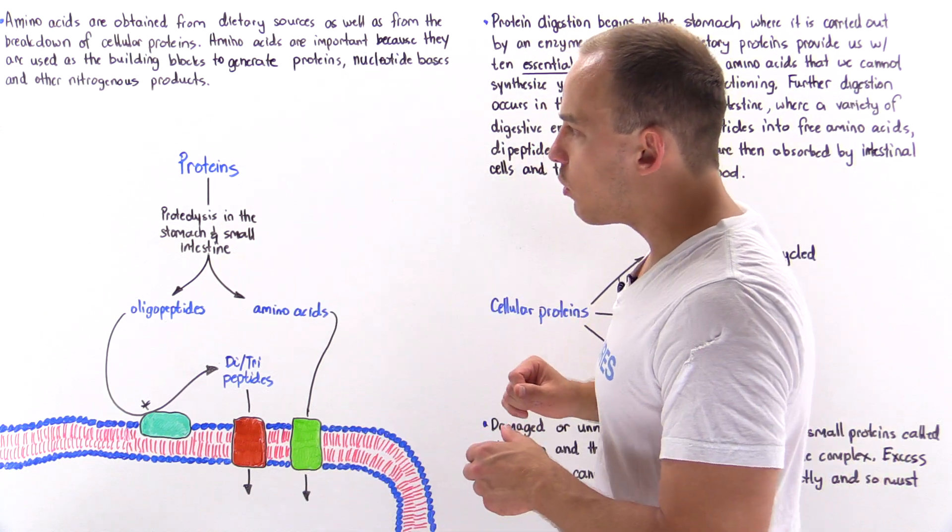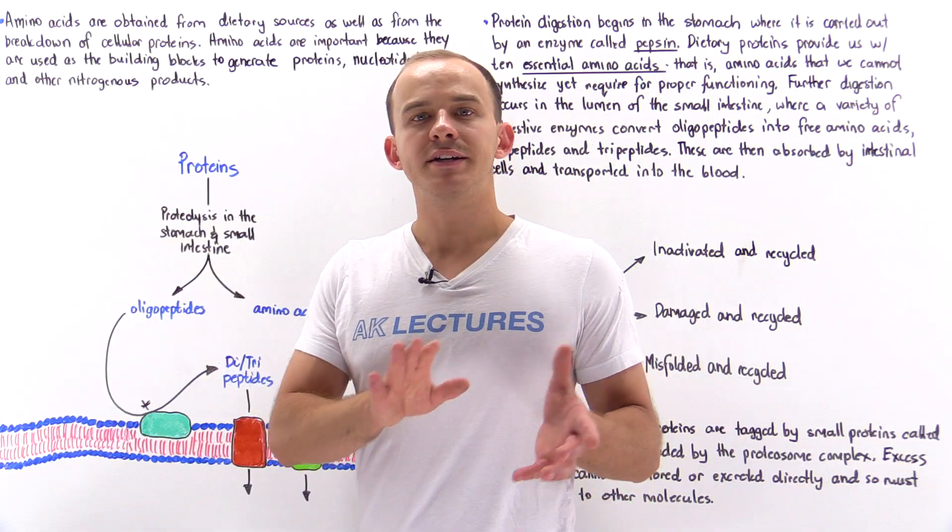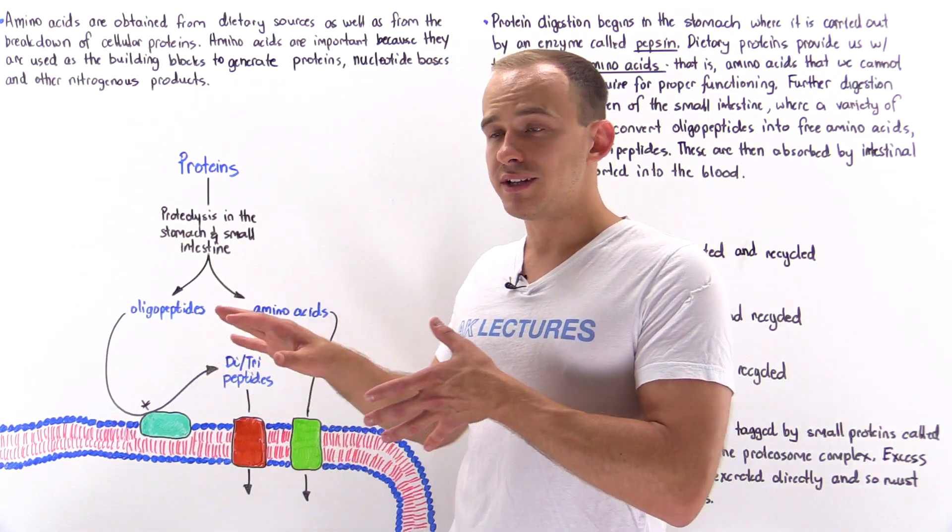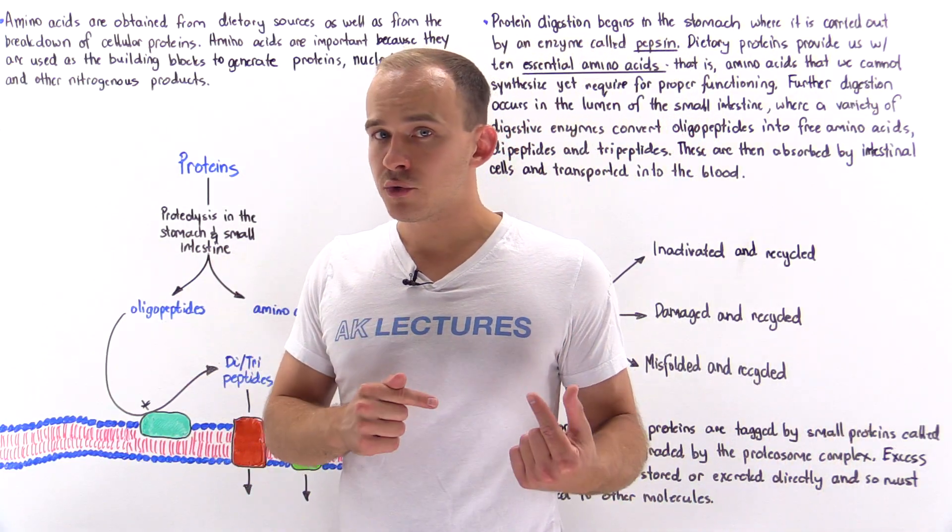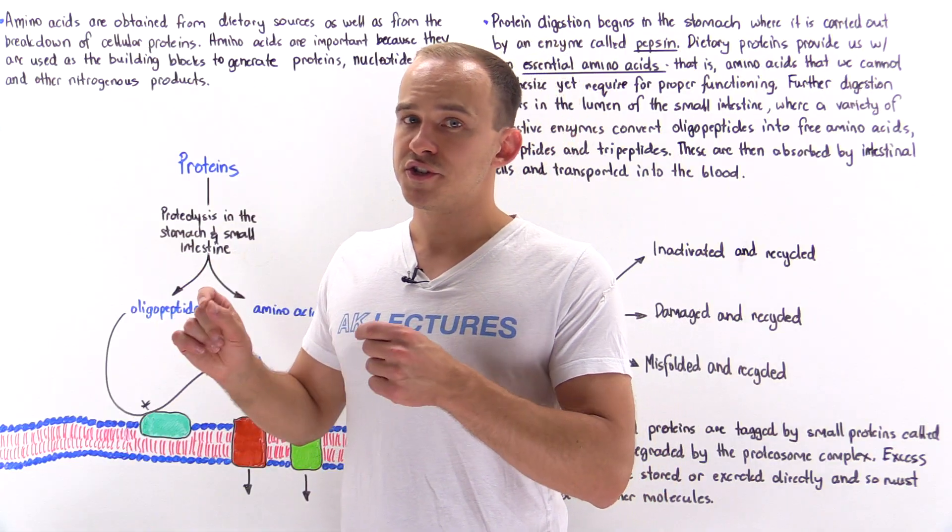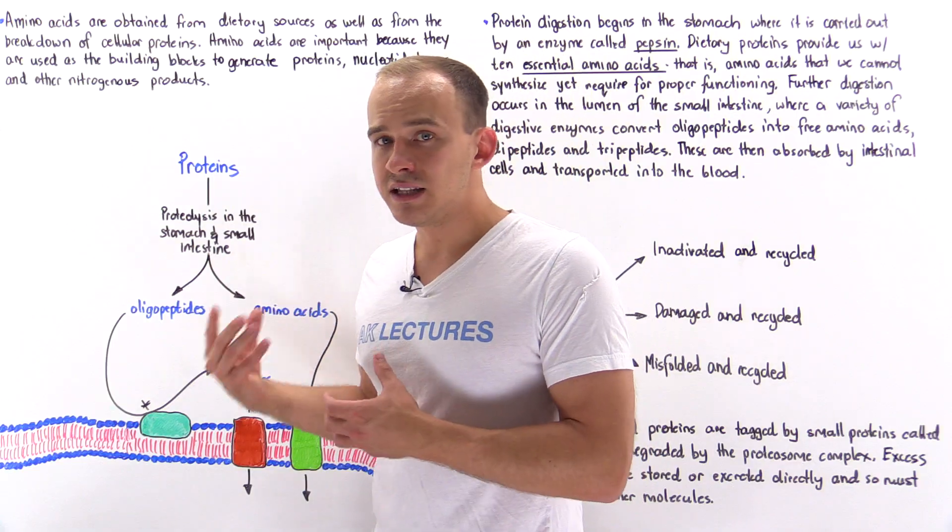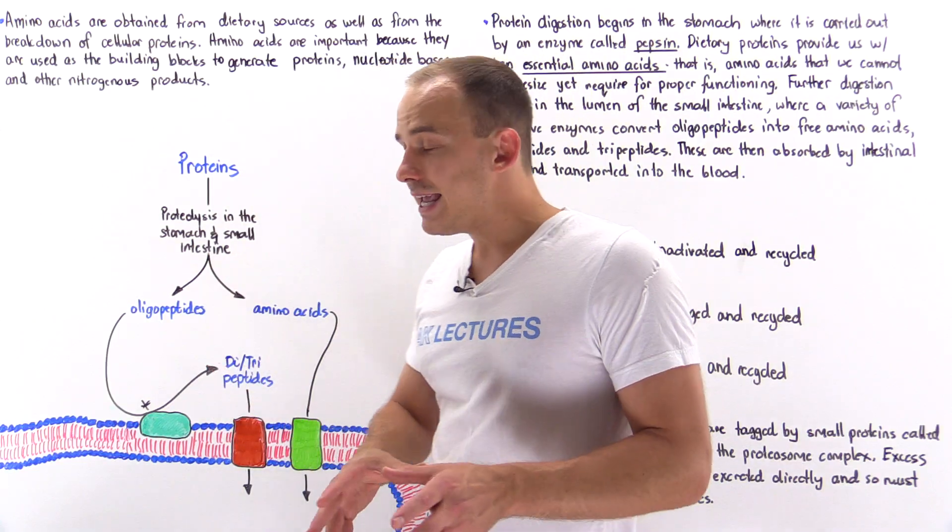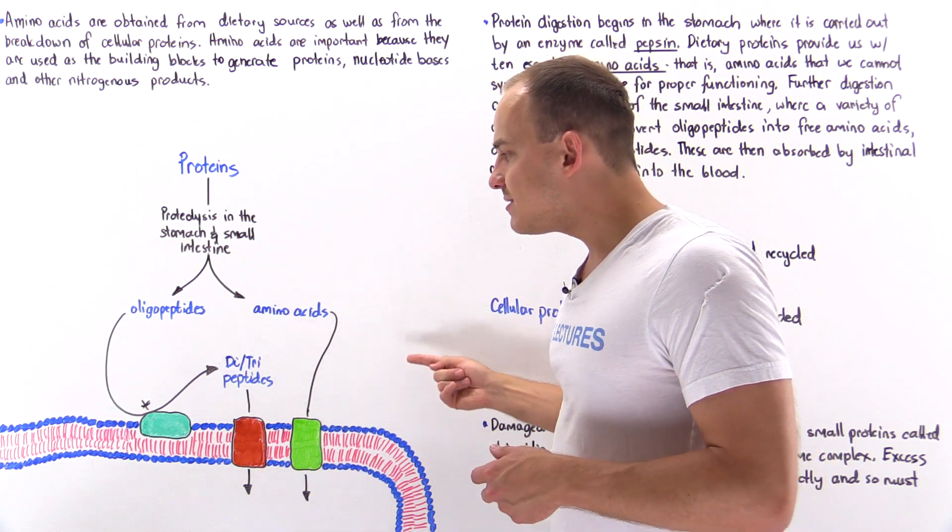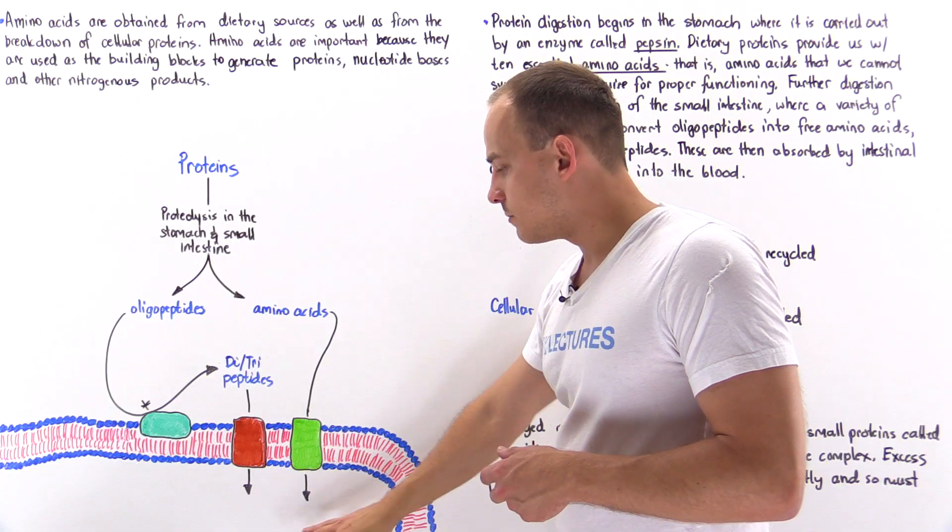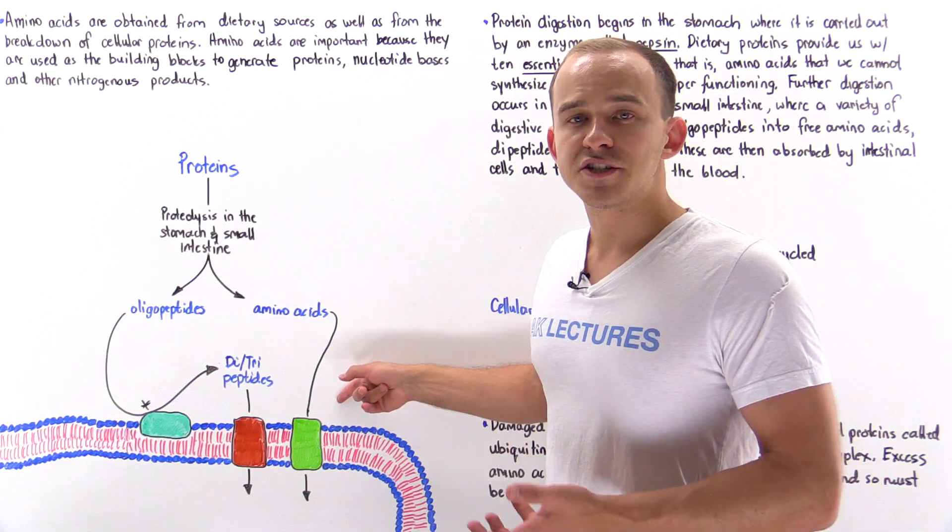Those smaller protein molecules move from the stomach lumen into the lumen of the small intestine. Once inside the small intestine, other proteolytic enzymes produced by the pancreas are secreted into the lumen. These proteolytic digestive enzymes begin to cleave the smaller proteins into oligopeptides and free amino acids.